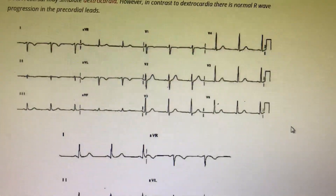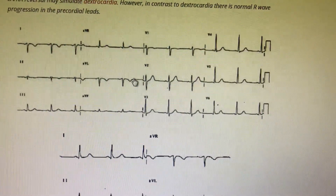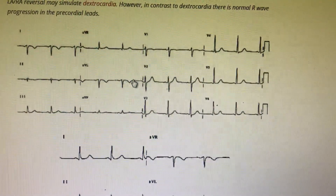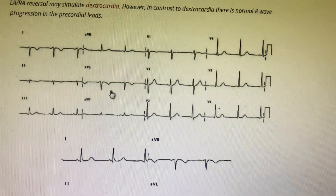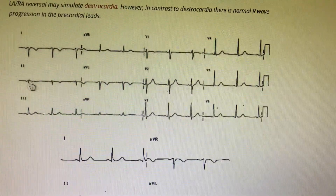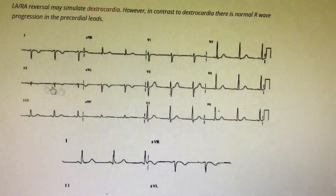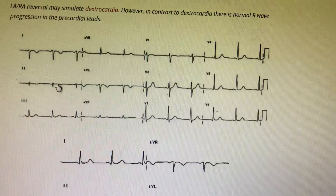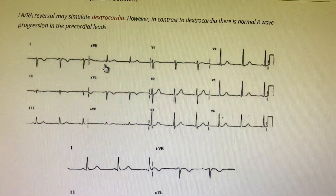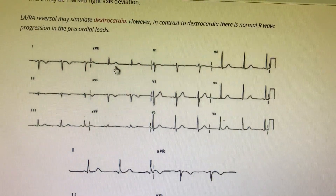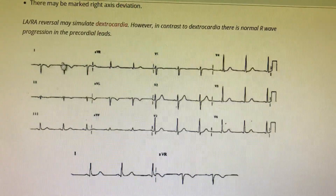We just discussed LA-RA misplacement — left and right arm lead misplacement. In this similar ECG, you immediately see that lead II is showing very low amplitudes. Then going to AVR, you see it is showing all positive: P is positive, QRS is positive, and T is positive. This gives a clear suspicion that something is going wrong.